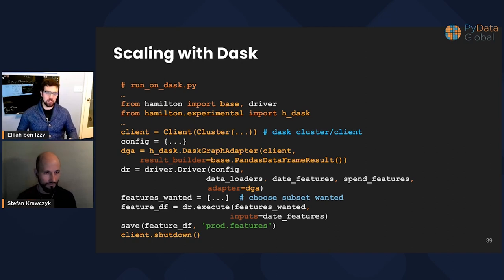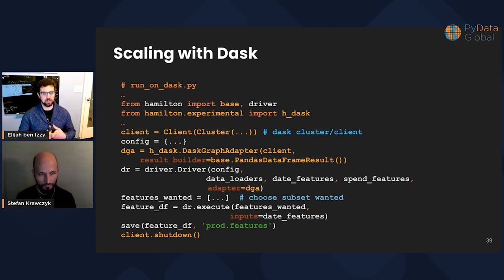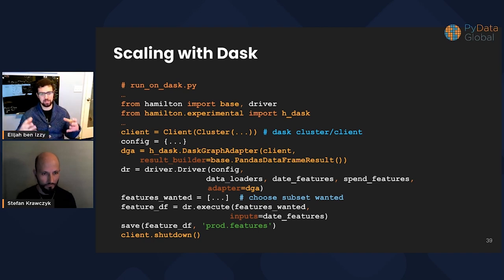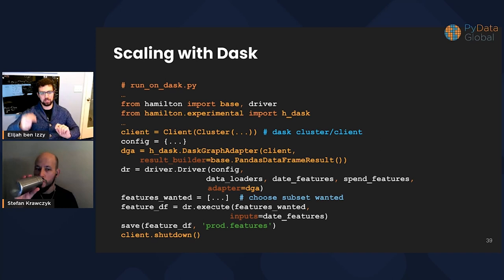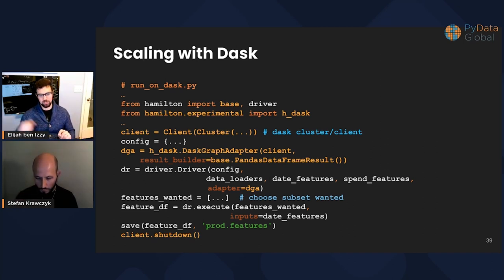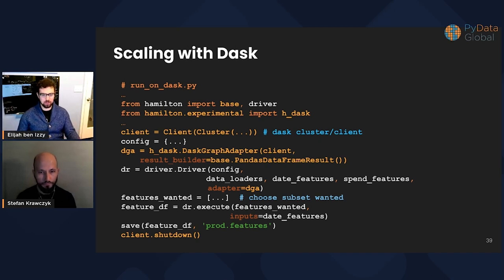What does this look like with Dask? It's the exact same. Import the Hamilton Dask extension, create a graph adapter — passing it a result builder so we can put everything together in a pandas data frame. Then instantiate a driver and pass it the Dask graph adapter, run it as we normally would, shut it down, give resources back, and we have run everything in parallel using Dask.